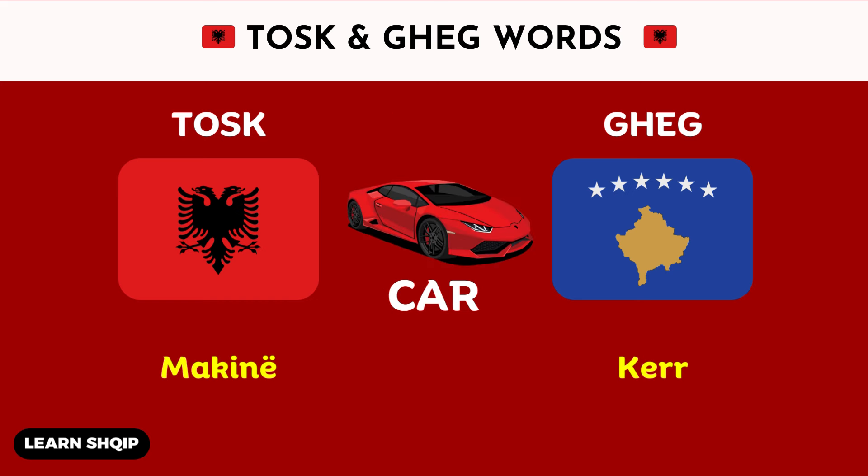The next one is the word car. Remember, in Albania, it doesn't matter whether you are Geg or Tosk — you will use the same word, Makin. However, if you travel to Kosova, you might also hear the word Ker for car.